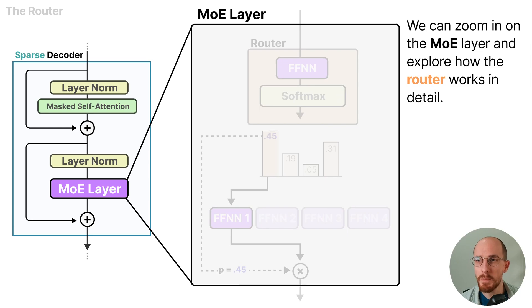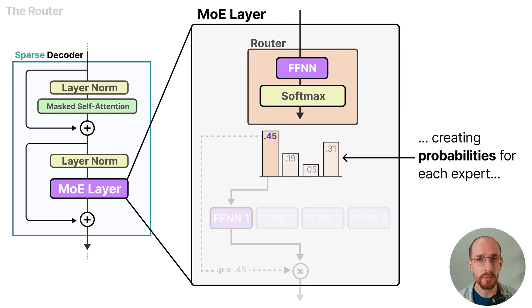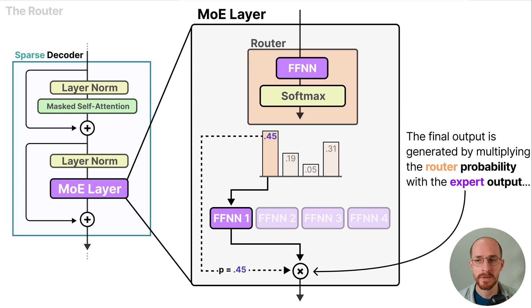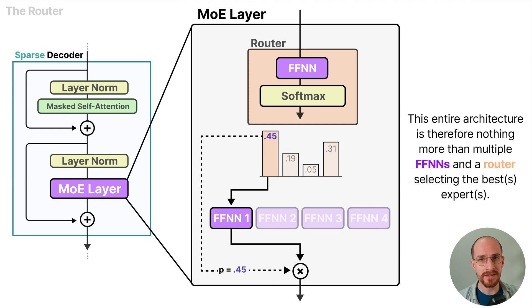We can zoom in on the MoE layer and explore how this router works in detail. After the feed forward neural network in the router we see a softmax function creating probabilities for each expert that are used to select and activate the best expert. The final output is generated by multiplying the router probability with the expert output creating a weighted activation. This entire architecture is therefore nothing more than multiple feed forward neural networks and a router selecting the best experts.